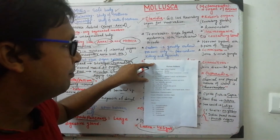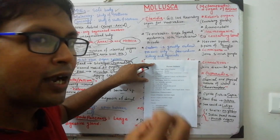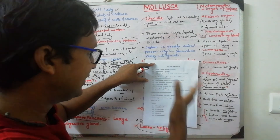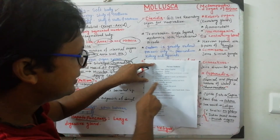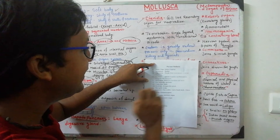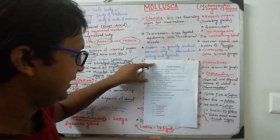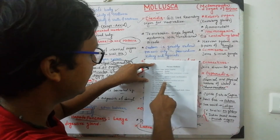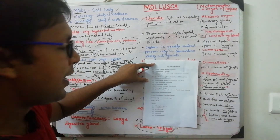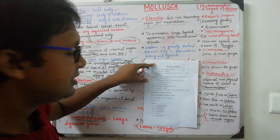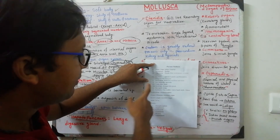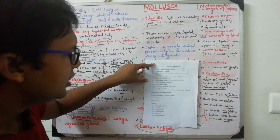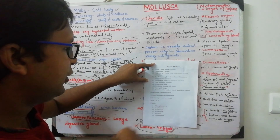Aplysia has two kinds of external outgrowths on the head: cephalic and rhinophore structures. Parapodia-like structures are present in Aplysia. Sea lemon is Doris, which lacks ctenidia and a shell. Sea butterfly is Spiratella. Chiton is a coat-of-mail shell genus.